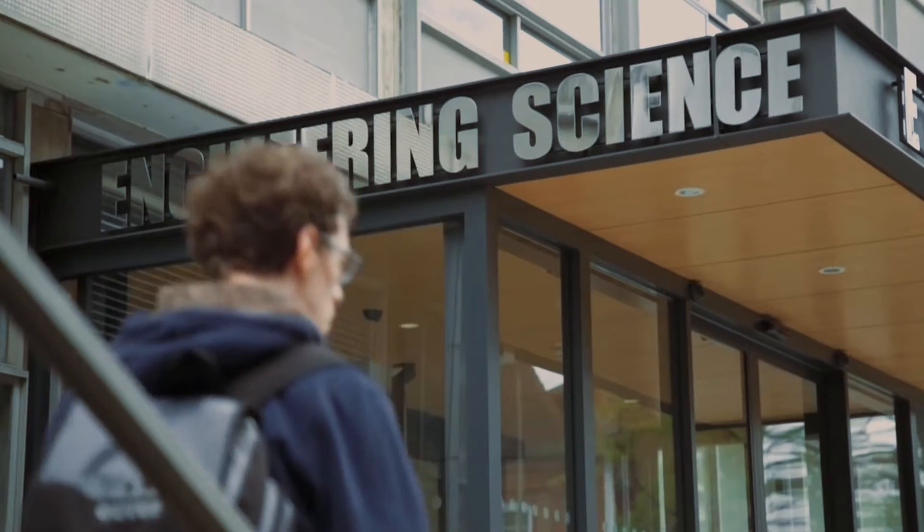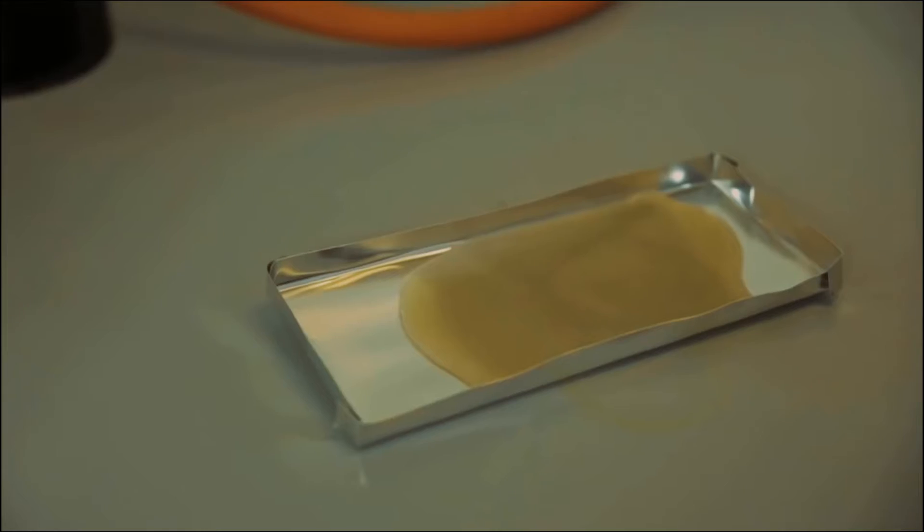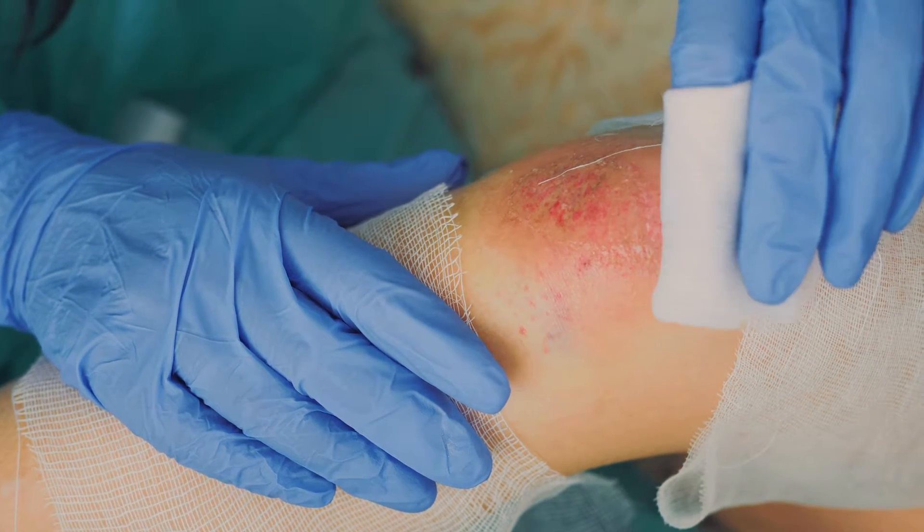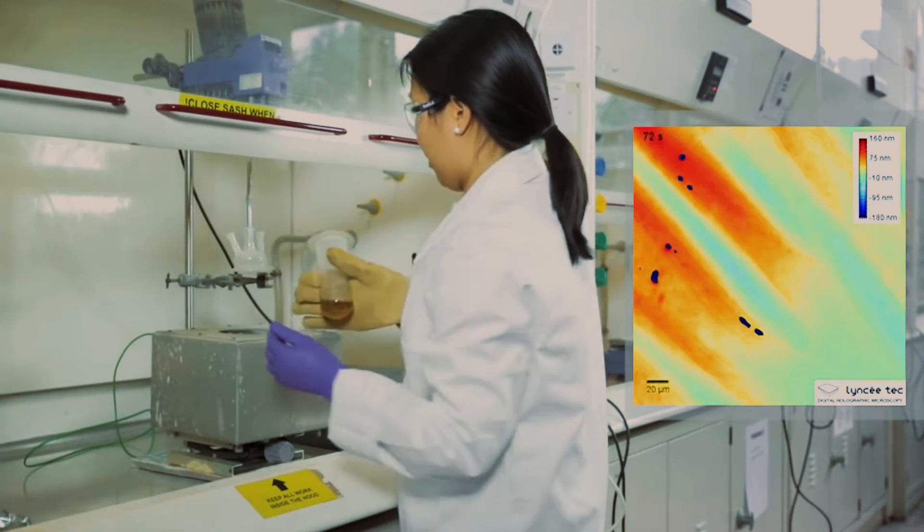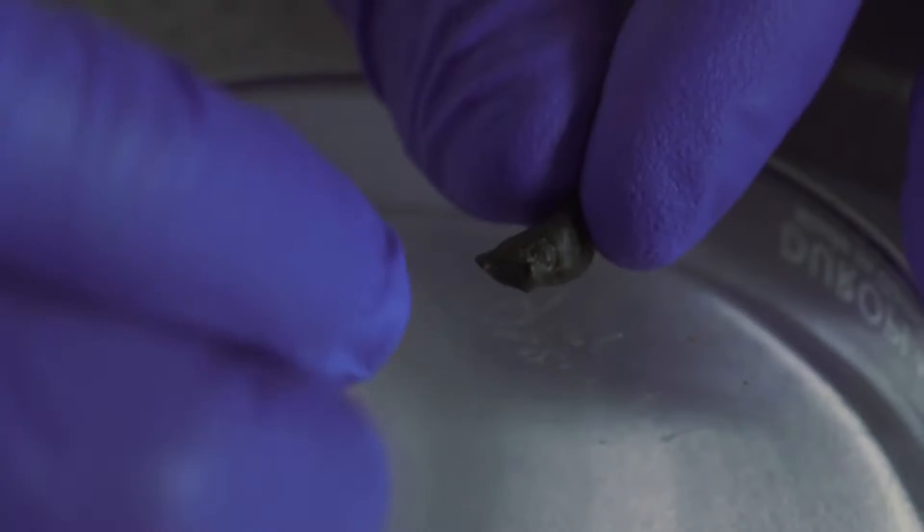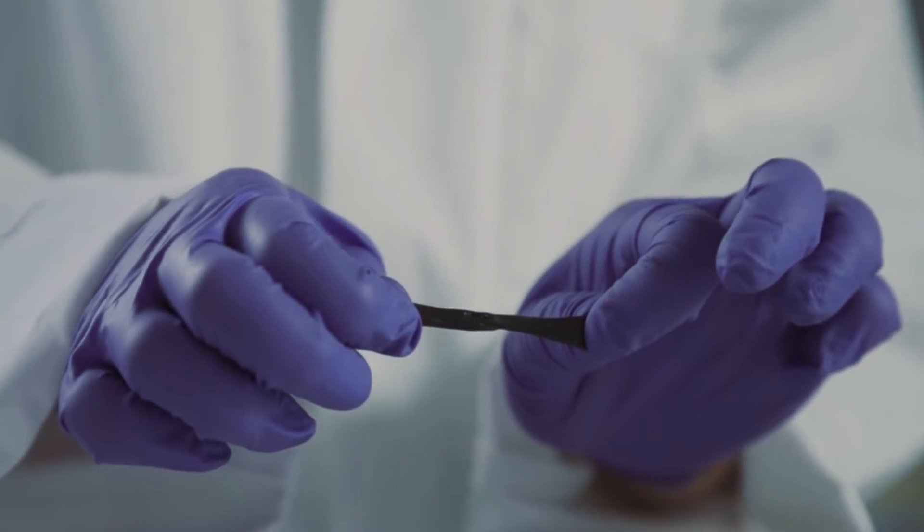Scientists at the University of Reading have led development of a new material that can repair itself at body temperature. The new polymer material opens the door to new self-healing wound dressings for use in medicine. While self-healing plastics have been developed before, the new material is remarkable because it is safe to humans and works at temperatures as low as 37 degrees Celsius, making it ideal for use in healthcare.